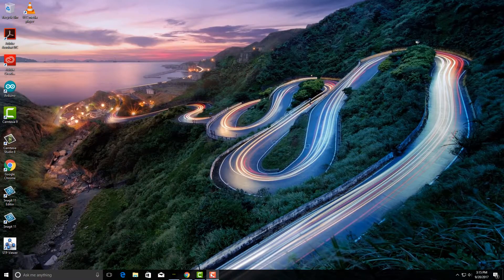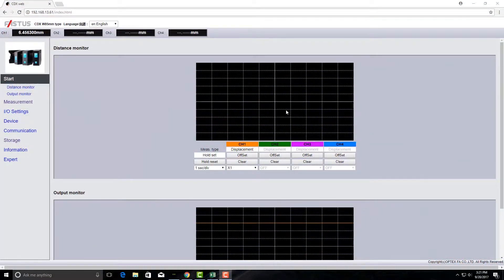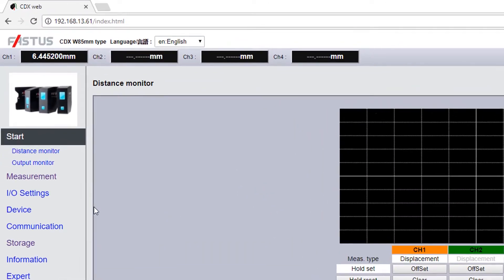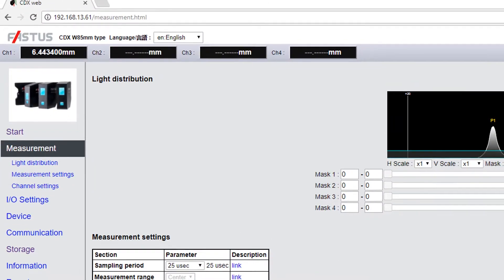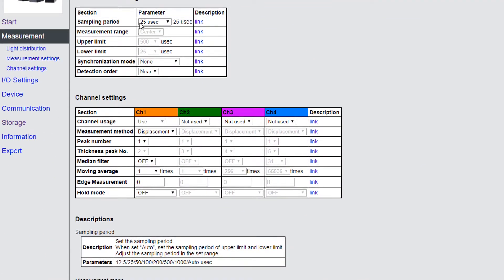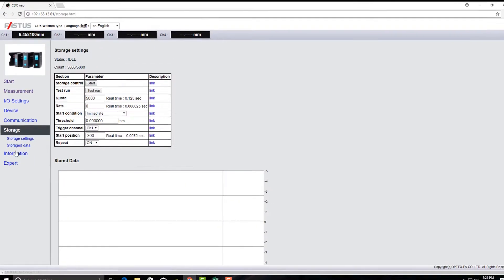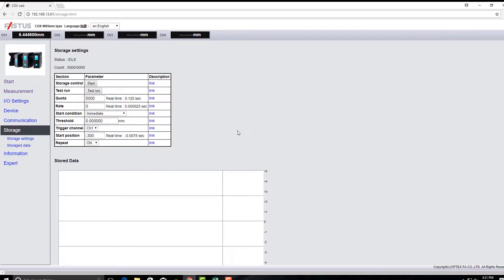Okay, with the sensor set up and measuring the connector pins, I'm going to open a web browser and navigate to the web server for the laser sensor. Set the sampling period to 25 microseconds, adjust the moving average to one and the median filter to off. Then select storage and the rate set at zero. Press the test run button and begin logging data.